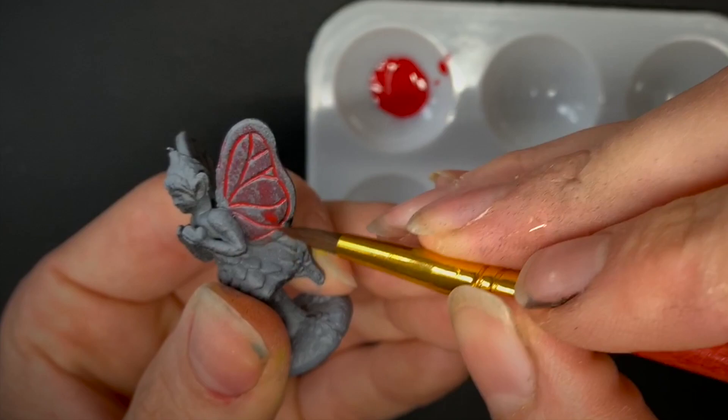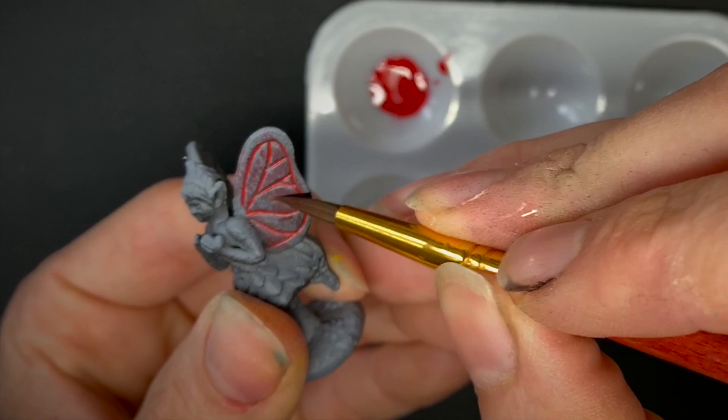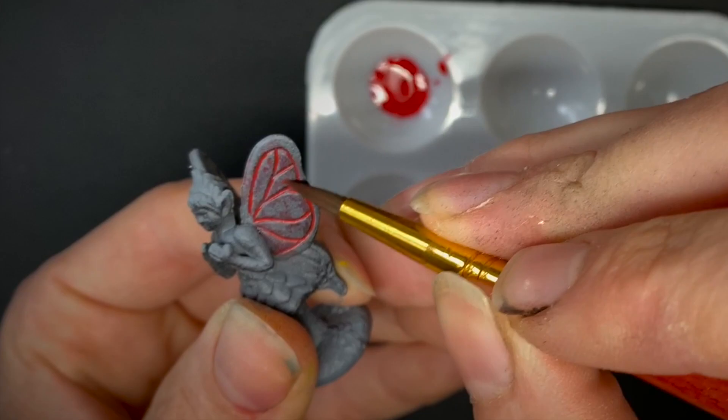Once you've gotten the paint dropped in the recesses, you can rinse your brush and go back in like this and clean up all the wet areas, spots you didn't want the wash on. These are just primed so this is simpler to do, and there you go.